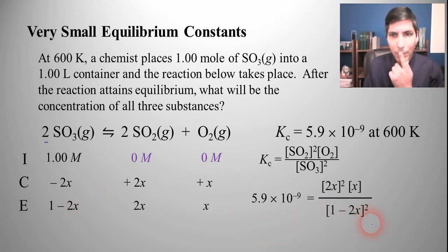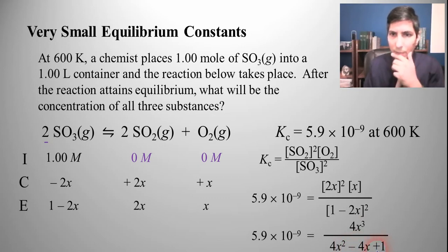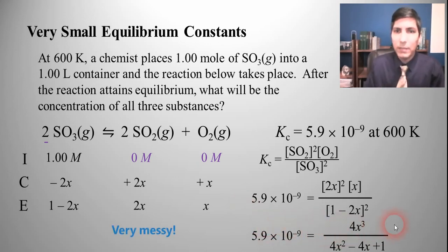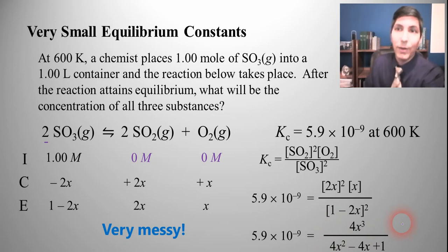Well when I start evaluating these I know 2x quantity squared times x is 4x cubed and I have to use FOIL on this down here so that's going to be 4x squared minus 4x plus 1. It looks like to solve this I'm going to have to cross multiply and I have a cubic equation. This is a messy problem, very messy.